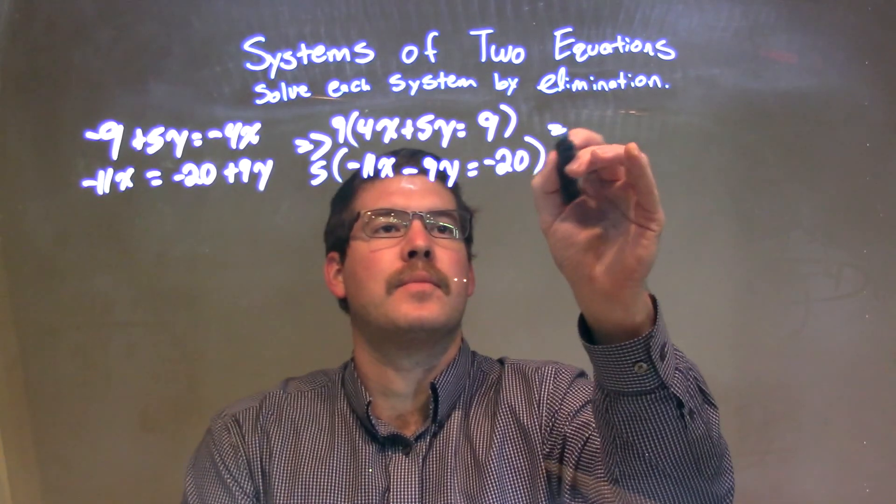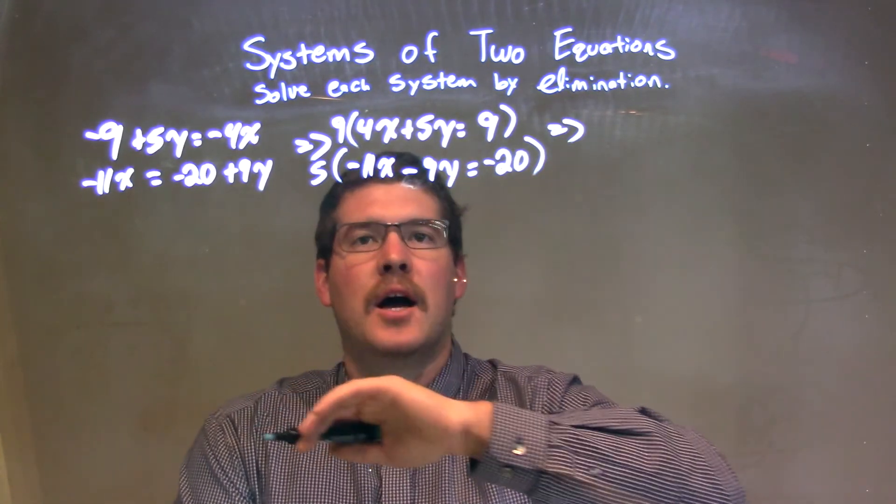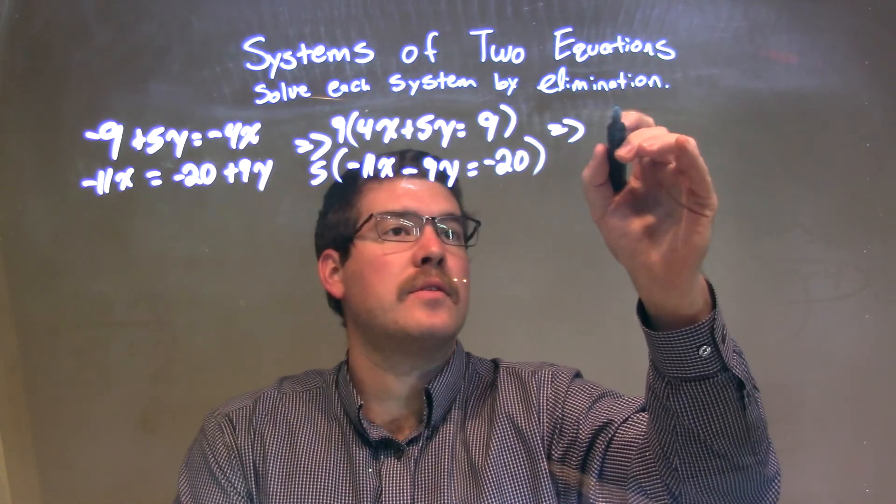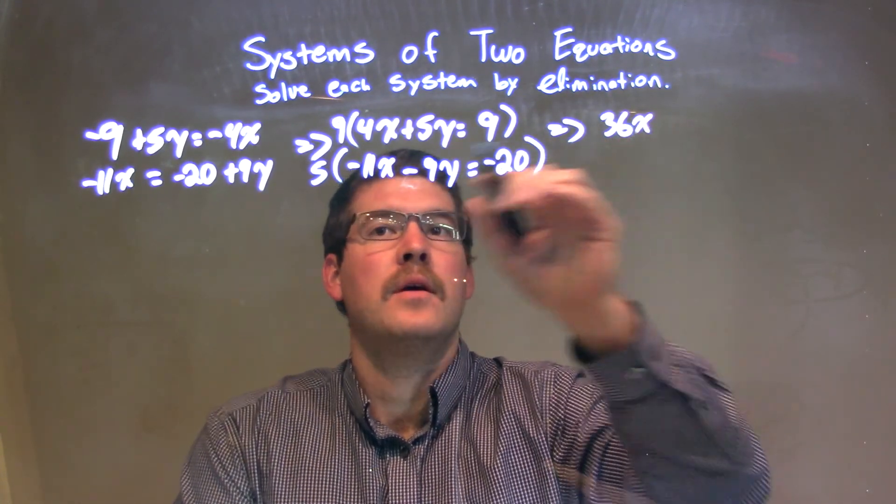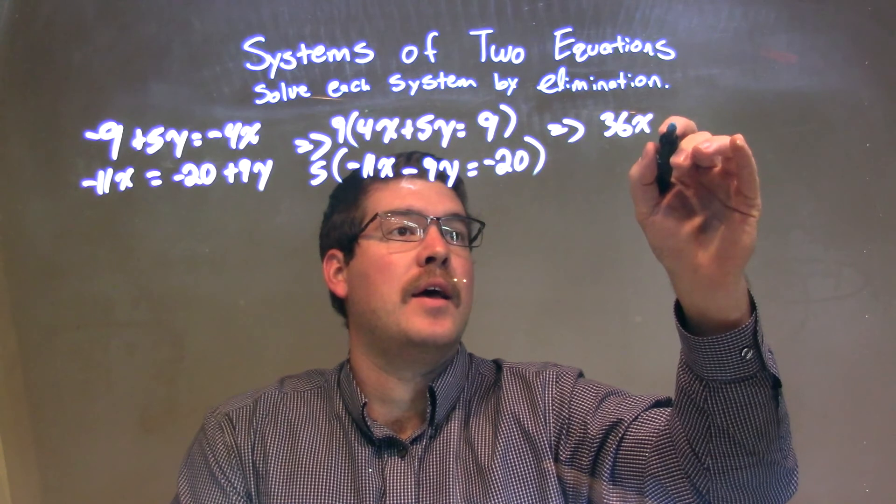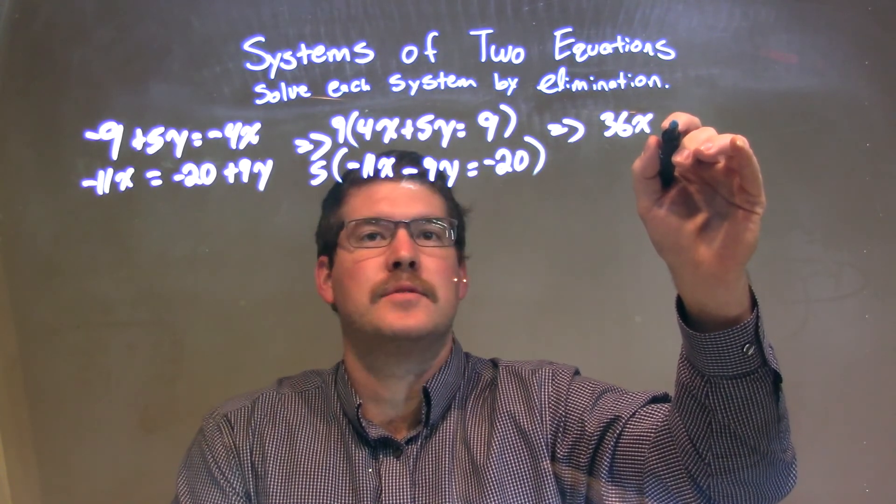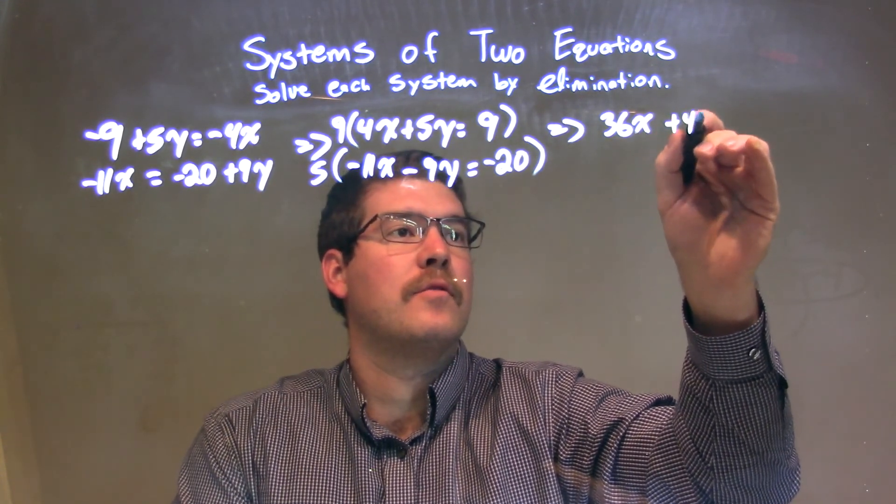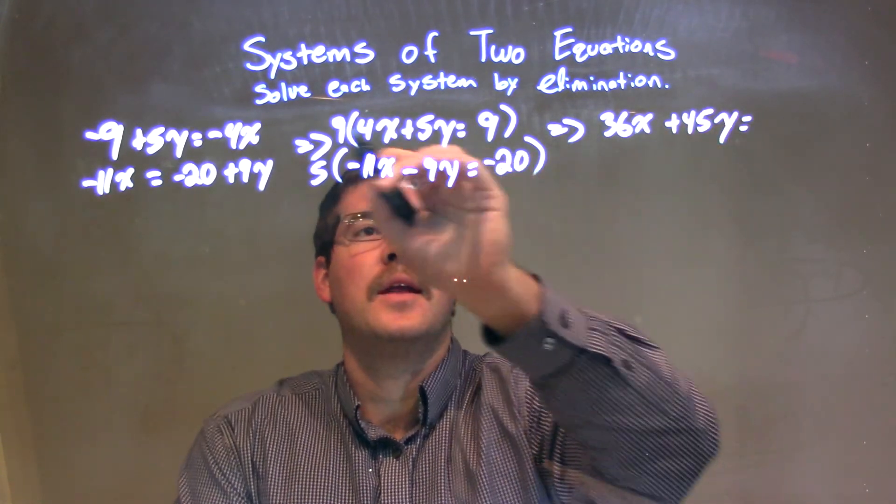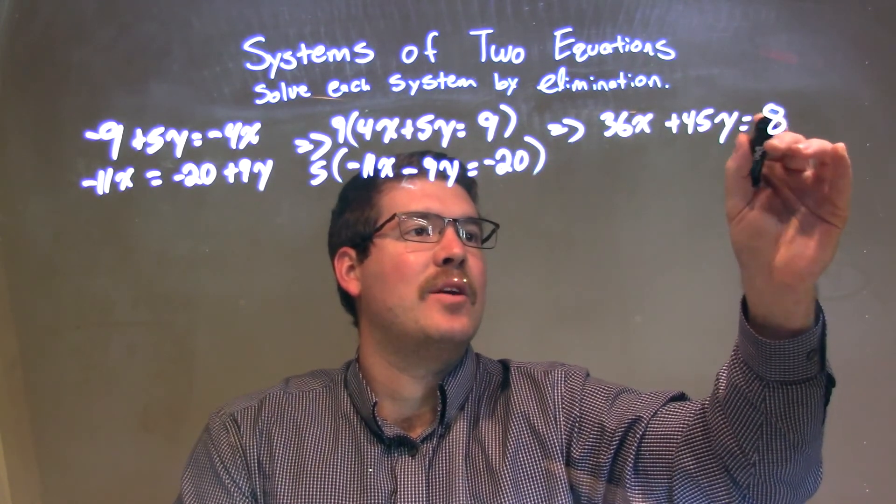When we multiply across, you can see here 9 times 4x is 36x, and then 9 times 5y is 45y, so we have 36x plus 45y, and 9 times 9 is 81.